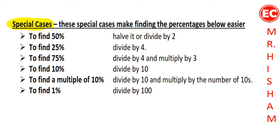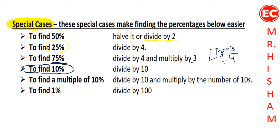It's important to know the special cases of percentage, especially if you are not using a calculator. To find 50% of any value or amount of money, just divide by 2. For 25%, divide by 4. To find 75% of a value, divide by 4 then multiply by 3 — that is, the value multiplied by 3 over 4. You can divide first then multiply, or multiply first then divide; both give the same result.